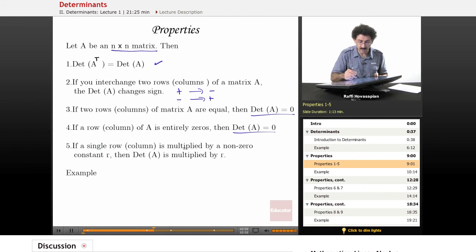If a single row or a column is multiplied by a non-zero constant R, then the determinant is multiplied by R. The whole determinant is multiplied by R if one row or column is just multiplied by R. Let's do an example.